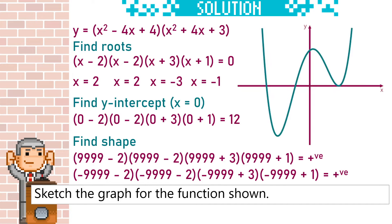Then when we draw the graph, notice that at x equals 2, it doesn't cross the line because it's a repeated root. It goes down and then up again. It sort of skims it. And we need to make sure to finish this question by putting in our y-intercept.